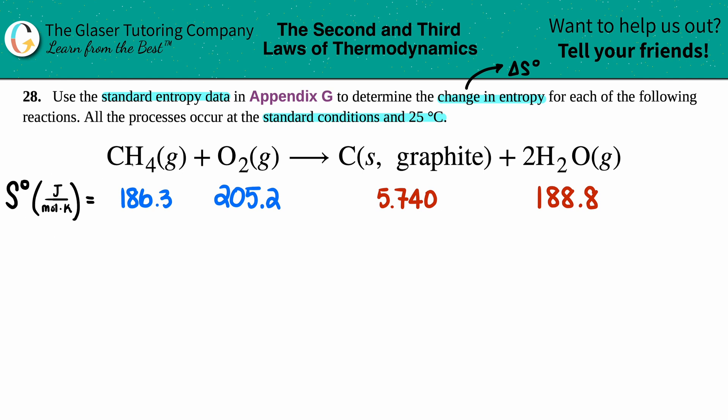So I went to the back of the textbook to find out what those S values were for each component. So for methane CH4, it's 186.3 joules per mole times Kelvin. O2 is 205.2. The carbon graphite is 5.740. And the H2O gas is 188.8.